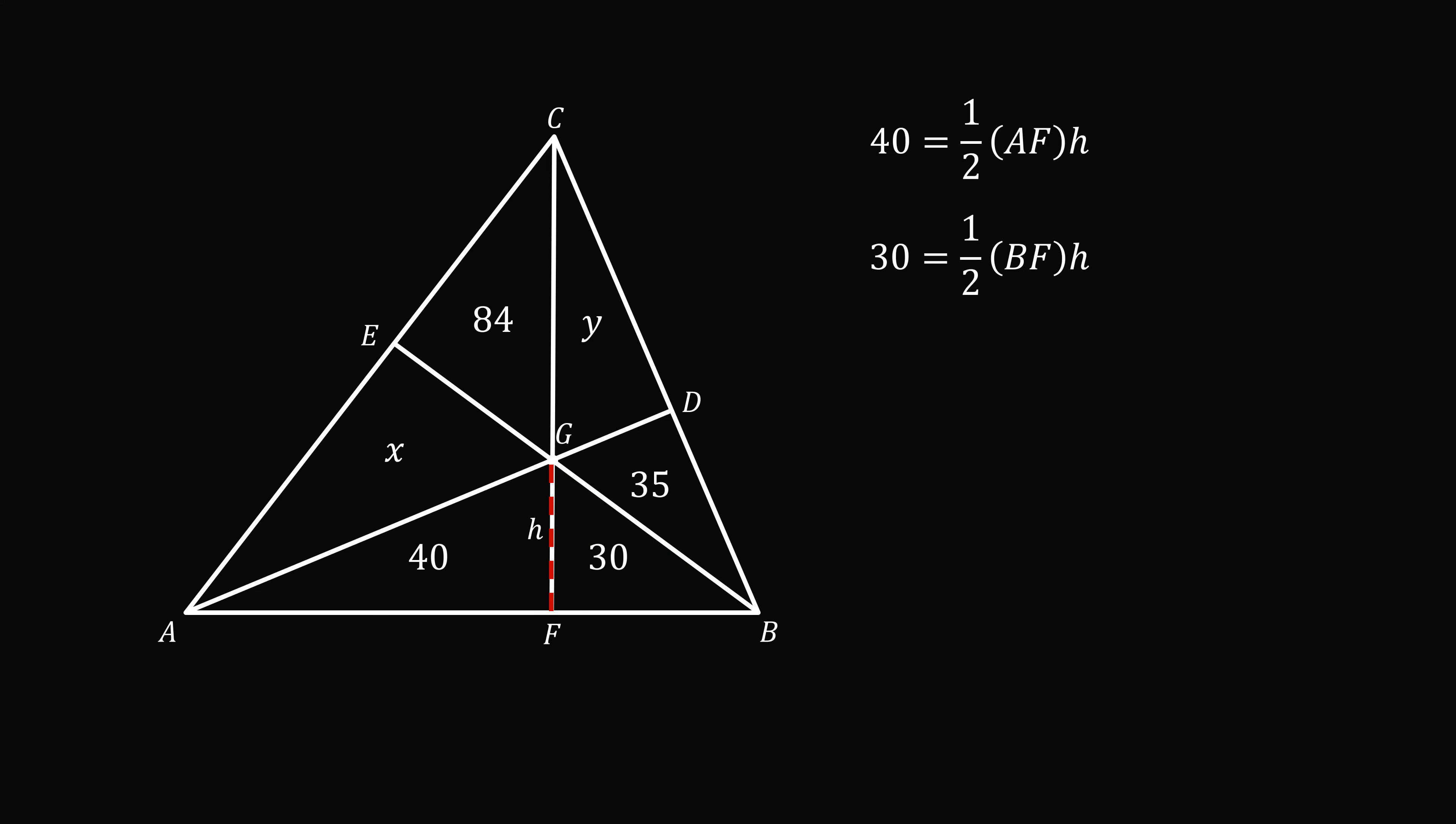We can now take the ratio of these two equations. We have 40 over 30 equals one half times AF times h, this is all over one half times BF times h. Now an amazing thing happens. The h terms cancel, and the one half factors cancel. So we have 40 over 30 equals AF divided by BF. So let's just take this and move it to the side for a second.